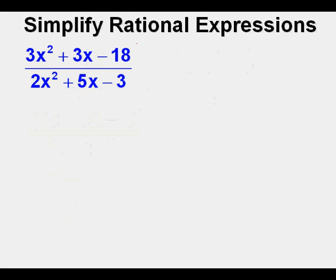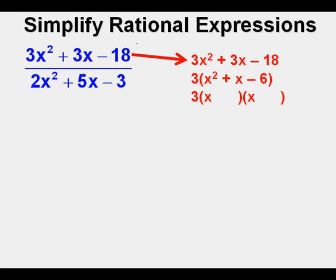Here's a more complex problem: the trinomial 3x squared plus 3x minus 18 divided by the trinomial 2x squared plus 5x minus 3. We'll factor the numerator first. I notice that 3 can be factored out of each term, giving 3 times quantity x squared plus x minus 6. Next we factor x squared plus x minus 6. Finding the factors of negative 6 is the challenge. The factors quantity x plus 3 and quantity x minus 2 work out. Once a person becomes skilled at factoring, this is quite easy to do.